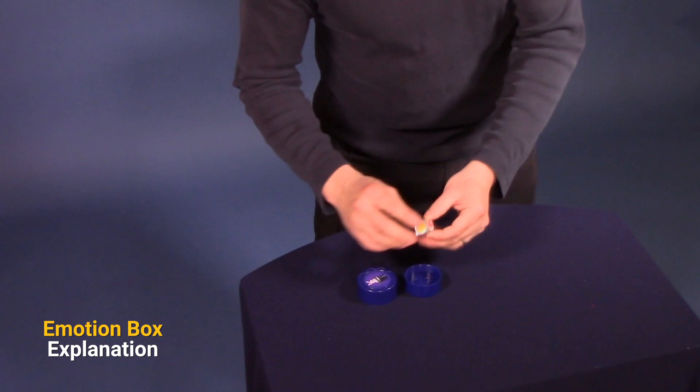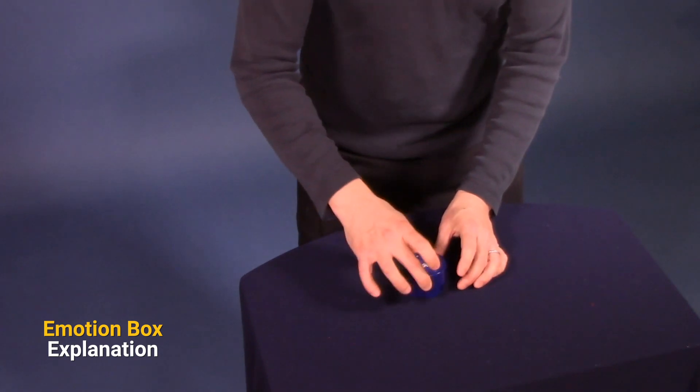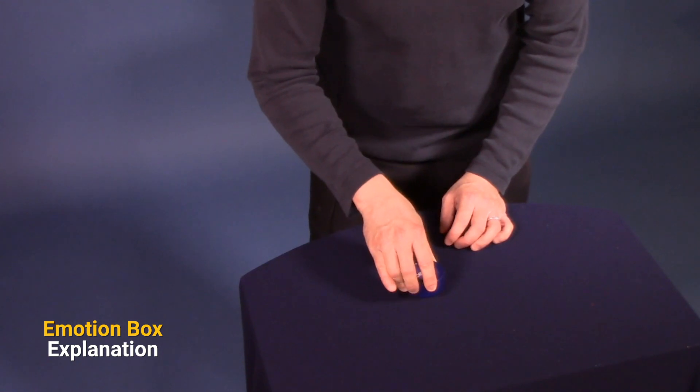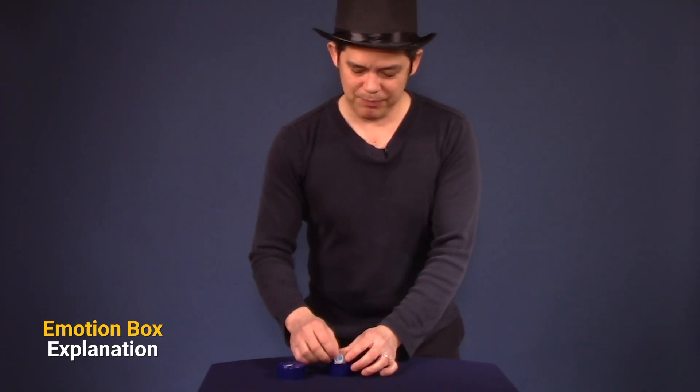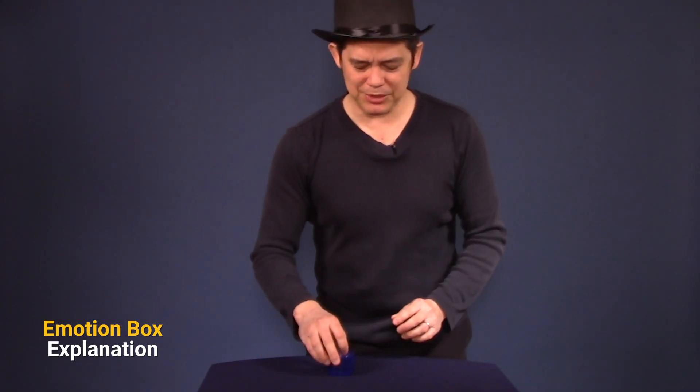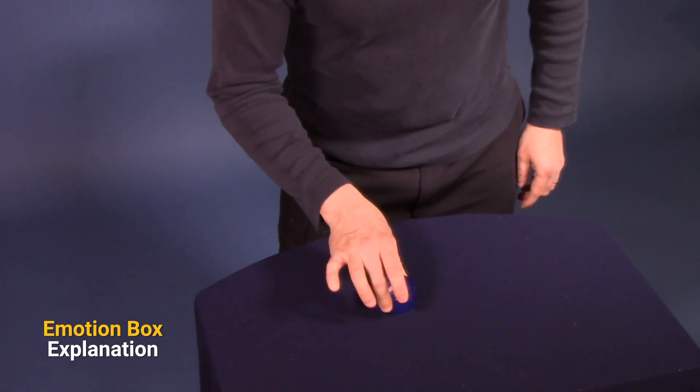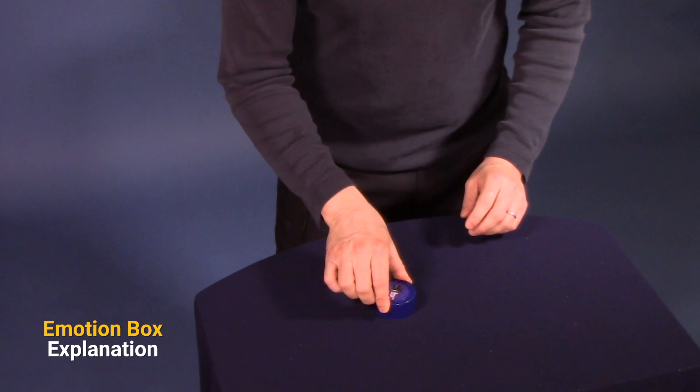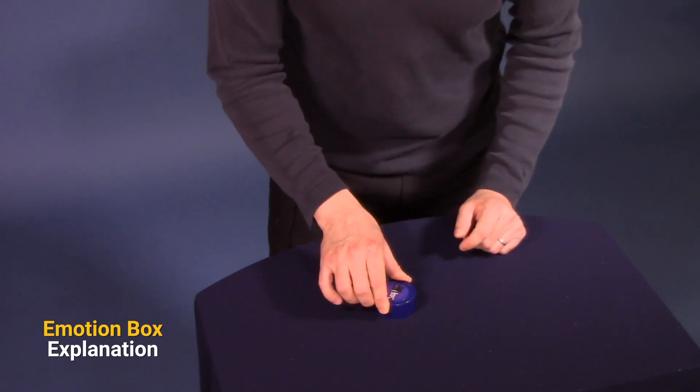If it is really, really loose, see how it wiggles around so much? Then I know they picked the happy face. If it is only a little bit loose, I know they picked the angry face. And if it is very solid and it doesn't move at all, I know they picked the sad face.